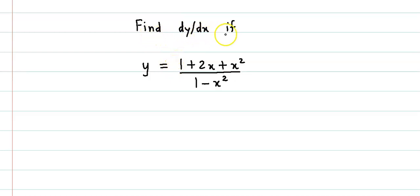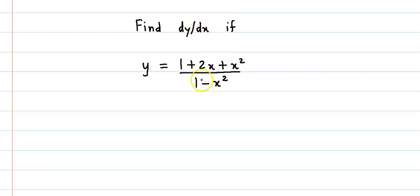Find dy by dx if y is equal to 1 plus 2x plus x square upon 1 minus x square. Before obtaining the derivative, let us factorize the numerator and the denominator.